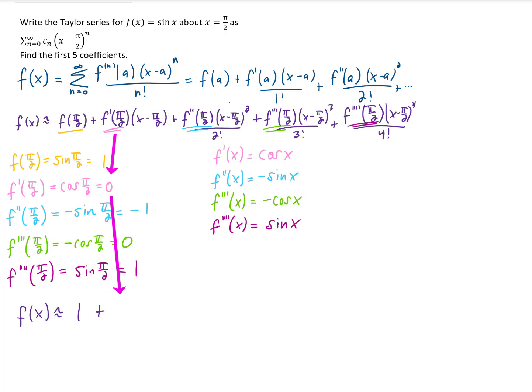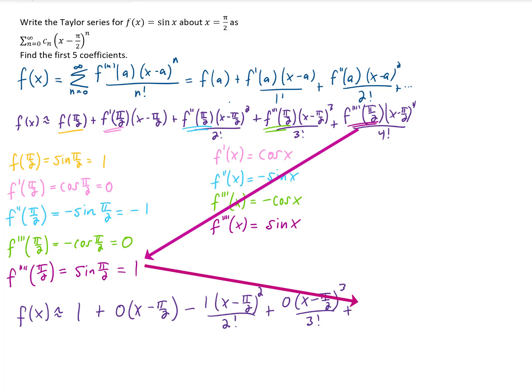f prime of pi over 2 is going to be 0. f double prime of pi over 2 was negative 1, so we'll make this minus. f triple prime of pi over 2 was 0 again. And f quadruple prime of pi over 2 was 1.